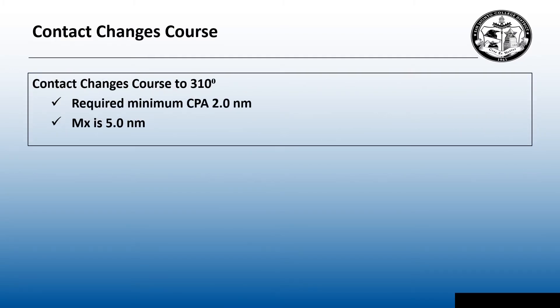We'll start with the contact changing course. The contact changes course to 310 degrees. Our required CPA for our own ship is two nautical miles and the execution point or MX is going to be five nautical miles.